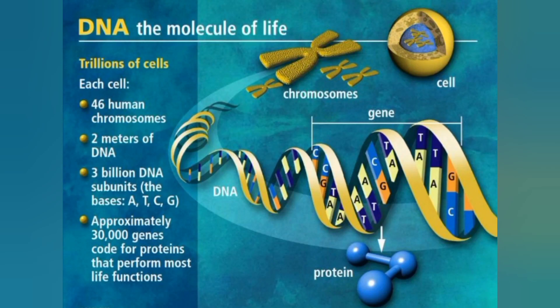DNA, the molecule of life. In trillions of cells in humans, 46 human chromosomes are present, and two meters of DNA. DNA has a length of about two meters, and three billion DNA subunits with bases including guanine and cytosine. Approximately 30,000 genes code for proteins that perform most cellular functions.